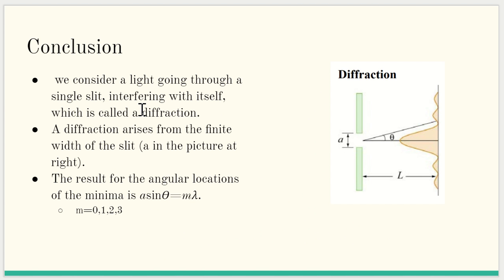We can consider a light going through a single slit interfering with itself, which is called a diffraction. A diffraction arises from the finite width of the slit A, looking at the picture at the right. The result for the angular locations of the minima is A times sine of theta equals M times lambda, where M can equal 0, 1, 2, or 3.